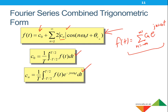In the complex exponential representation, we represent our periodic signal in the form of complex exponentials. In the combined trigonometric form, we represent our signal in the form of cosines only — a cosine signal — with the corresponding coefficient value, which we can calculate in the same way as before.